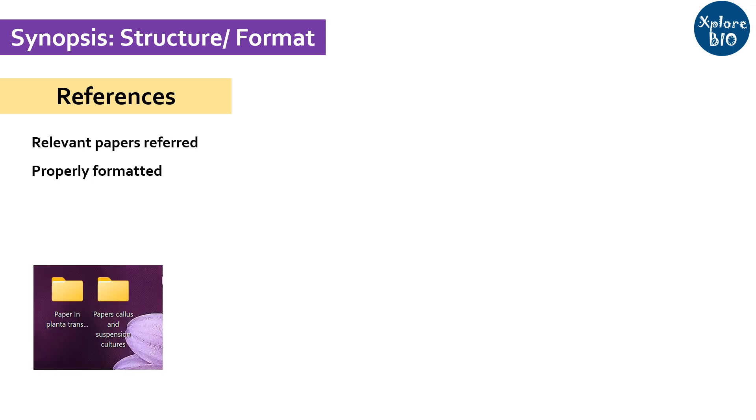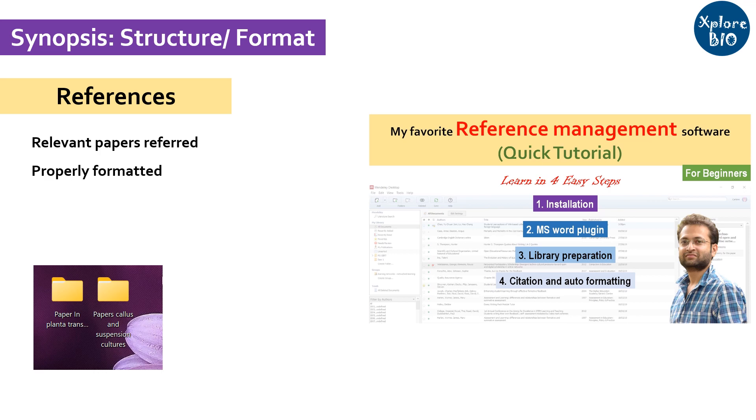At last, you mention the references that you have cited in the introduction, literature review and methodology sections. Care needs to be taken that all the references are properly formatted. Do make a separate folder for research papers and other articles that you have read and used for writing your research documents. I suggest you to use a reference manager to cite the references in your synopsis. This helps you to automatically format the references, avoiding mistakes and saves a lot of time. I have made a separate tutorial on reference management software. You may refer to it later.